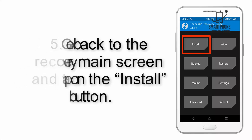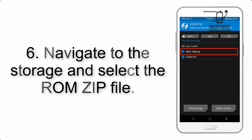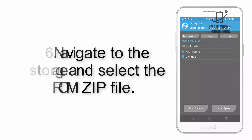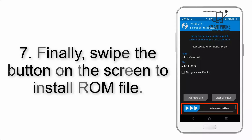Step 5: Go back to the recovery main screen and tap on the Install button. Step 6: Navigate to the storage and select the ROM zip file. Step 7: Swipe the button on the screen to install the ROM file.